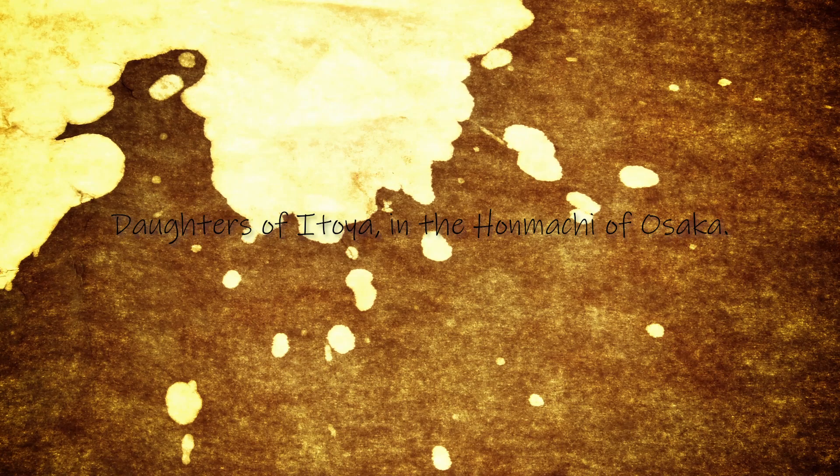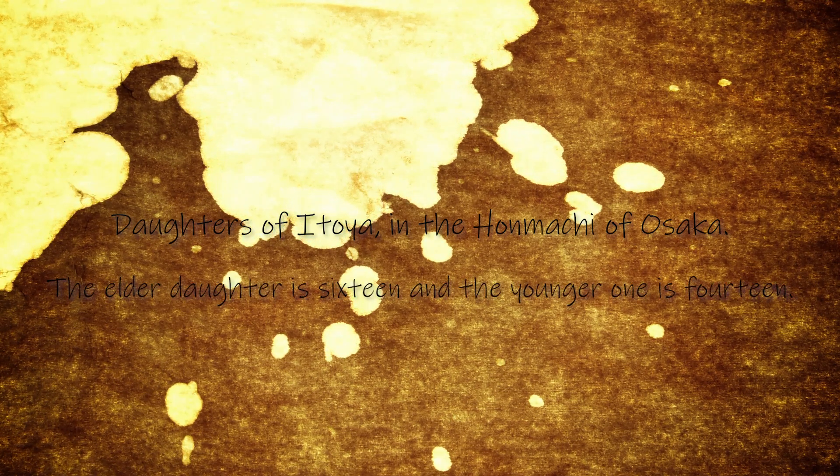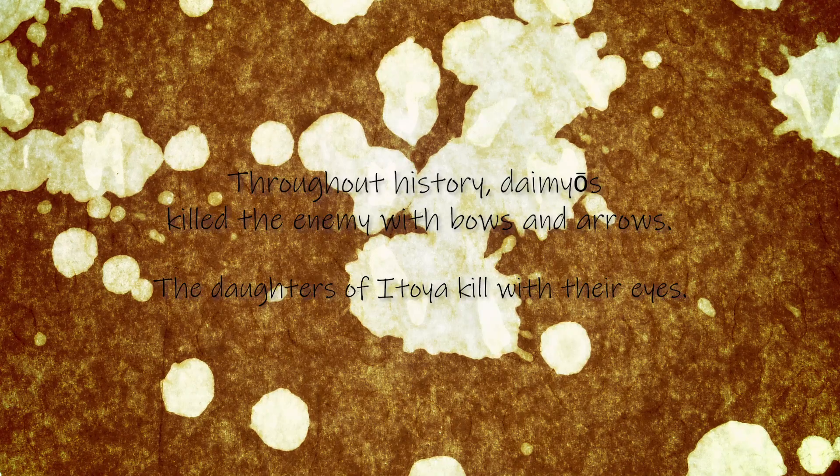Here's a specific example by the poet Sanyo Rai. Daughters of Itoya in the Honmachi of Osaka. The elder daughter is 16 and the younger one is 14. Throughout history, daimyos killed the enemy with bows and arrows. The daughters of Itoya kill with their eyes. Okay, so Sanyo Rai might be kind of a skeetbag. We're going to come back to this core design philosophy, but that's the how.